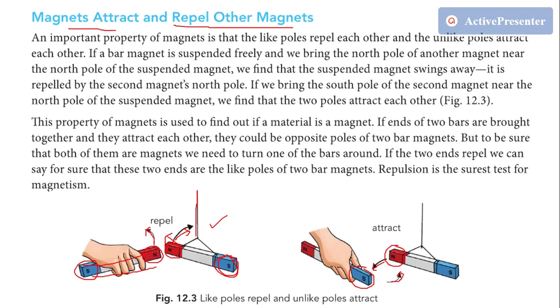Similarly, if we put closer the north pole of another magnet to the south pole of suspended magnet, they both will attract each other. So from this we can say that like poles repel each other and unlike poles attract each other. It means north pole to north pole and south pole to south pole will repel each other, and north pole to south pole or south pole to north pole will attract each other.